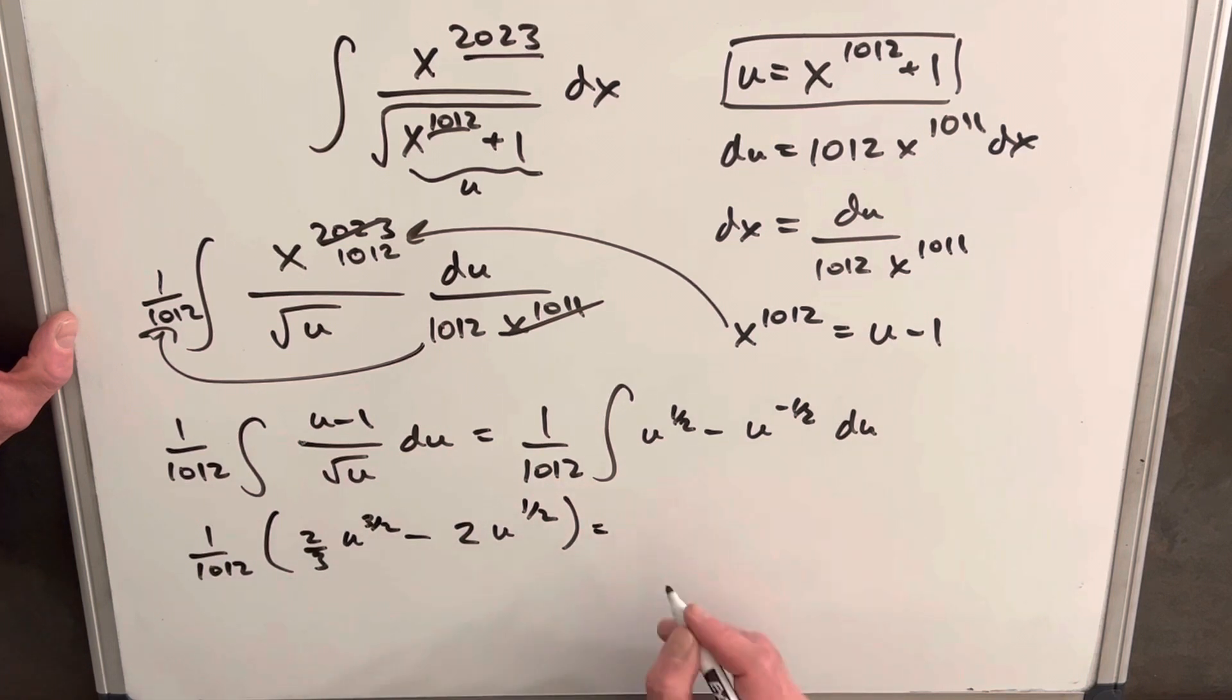Before I back substitute, let's factor out a square root of u. So we're going to have... and I think, yeah, I'm going to actually, we'll back substitute it and we'll do it all in one step. So we're going to have our square root of u, which is going to be square root of x^1012 plus one.